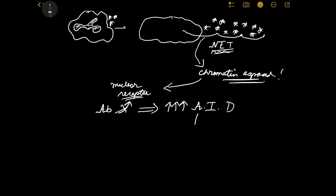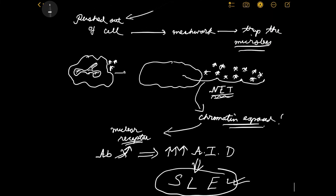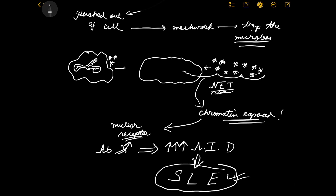Especially, an autoimmune disorder known as Systemic Lupus Erythematosus — SLE — is associated with this. This is the price that the body pays for dealing with increased bacterial load problems, for example in sepsis.